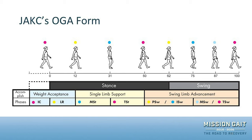Looking at the top header of the form, we see illustrations of all eight phases of gait as defined by Rancho Los Amigos: initial contact, loading response, mid stance, terminal stance, pre-swing, initial swing, mid swing, and terminal swing. Notably, this form organizes pre-swing as part of swing limb advancement rather than stance, which is a common misconception.